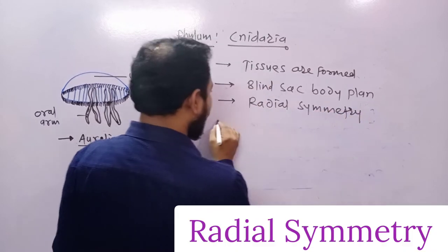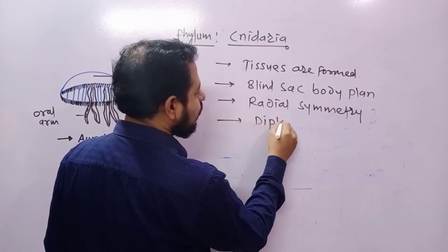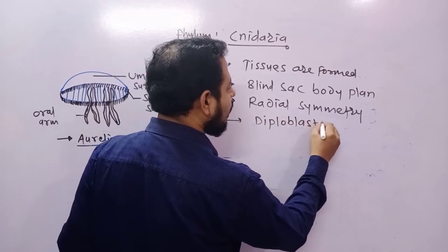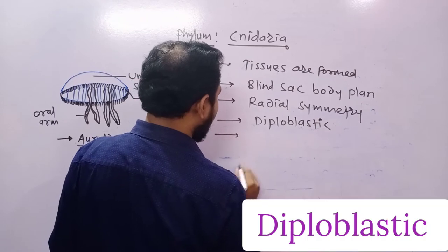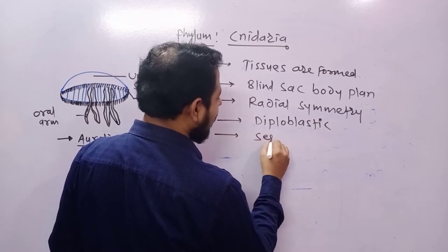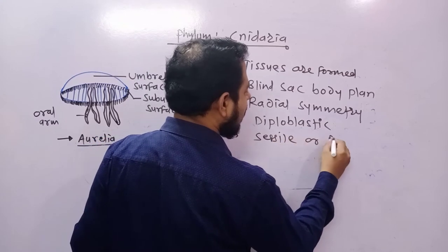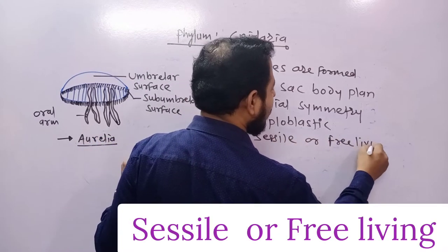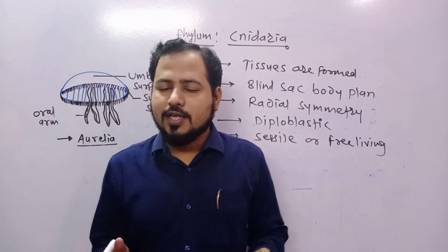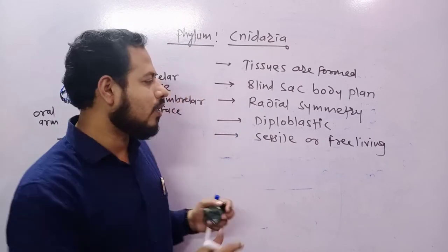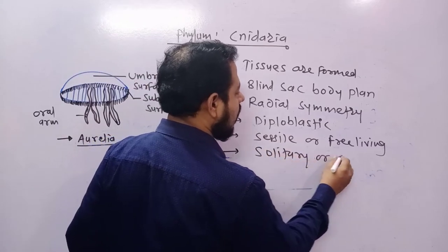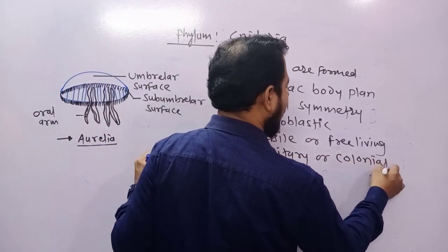These animals show two germ layers in embryonic conditions, hence they are called diploblastic animals. They may be solitary as well as colonial in nature.